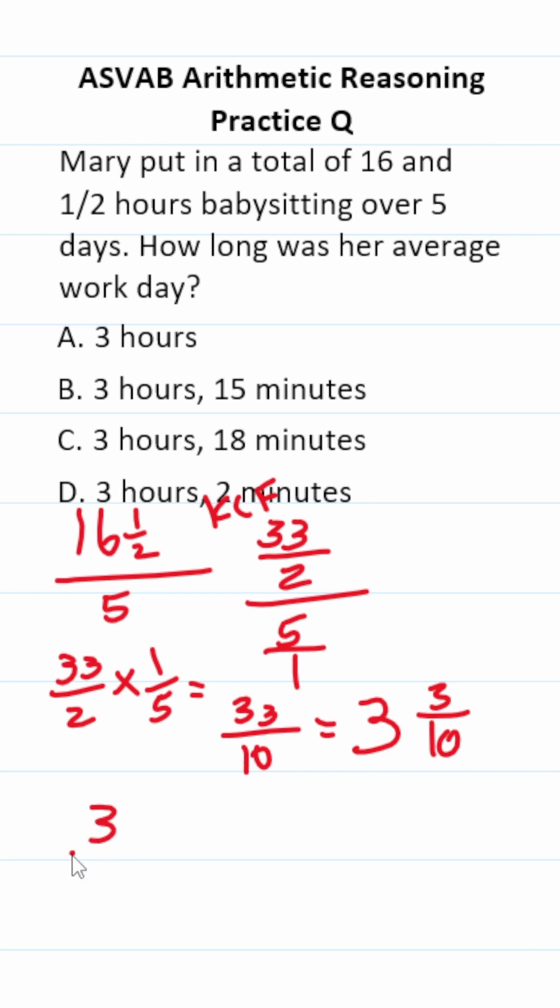Now we got to convert three tenths to be in terms of minutes. So we're going to multiply it by 60. Place this over one. 10 goes into 10 one time. 10 goes into 60 six times. Three over one is three times six over one, which is six. So 18.